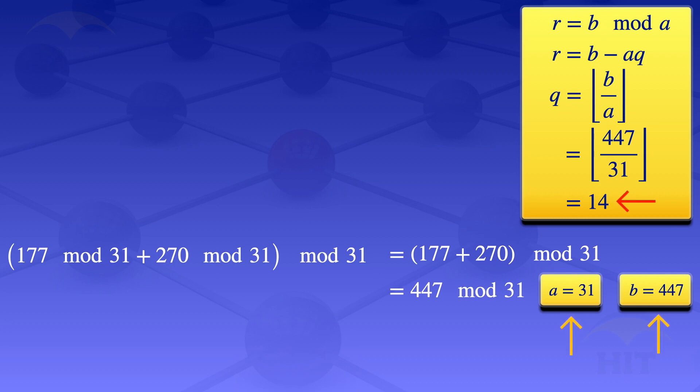We substitute a, b, and the quotient into the formula to get the remainder: 447 - 31(14) = 18. That's the result for the problem.